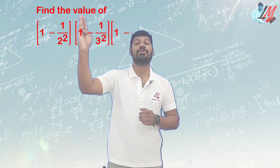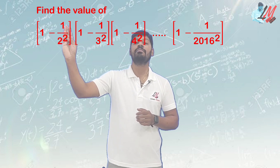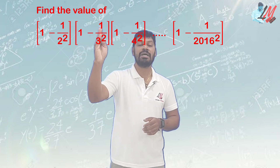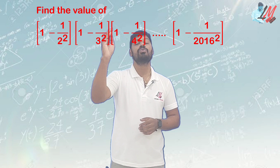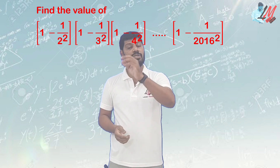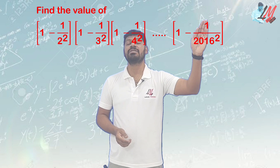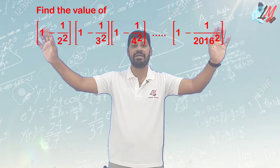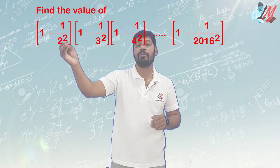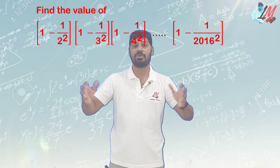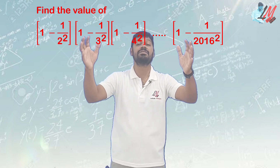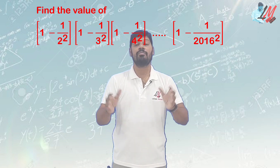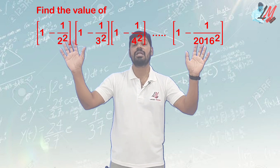Just have a look here — find the value of (1 minus 1/2 squared) into (1 minus 1/3 squared) into (1 minus 1/4 squared) and so on, up to (1 minus 1/2016 squared). This is a very complicated operation involving subtractions, denominators, squares, and multiplications. How to calculate and simplify these values to get the final answer is what we will solve. This systematic problem is actually very easy and innovative.